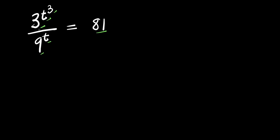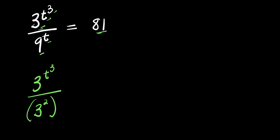Now, 3 is the base here, 9 is the base here, and 81 is the result here. So we can express this as 3 to the power of t cubed, divided by — 9 is a perfect square, which is 3 to the power of 2, raised to the power of t — equals 81, which is simply 3 to the power of 4.